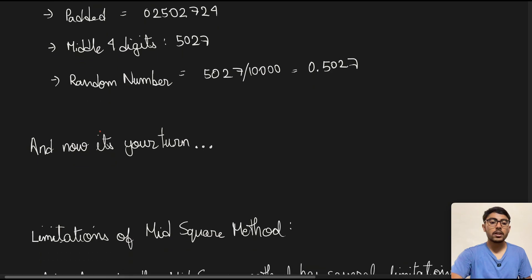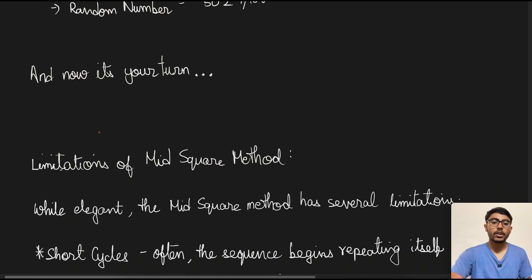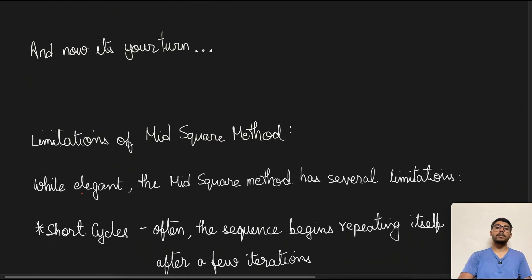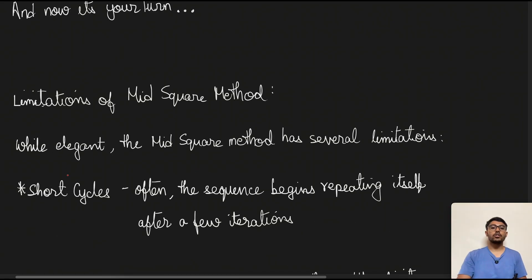Now we will go to the limitations of the mid square method. So the first thing is while this method seems elegant, the mid square method has several limitations to it. So the first limitation here is short cycles. Often you will find the sequence begins to repeat itself after a few iterations, which defeats the purpose of creating random numbers because then it just gonna repeat itself.